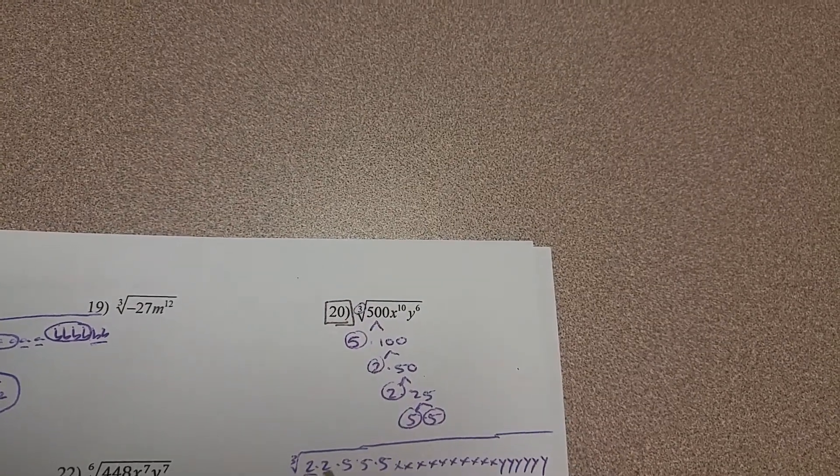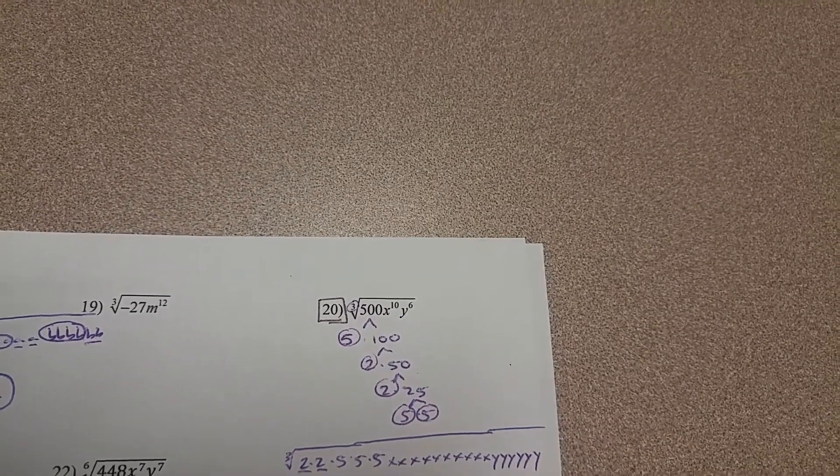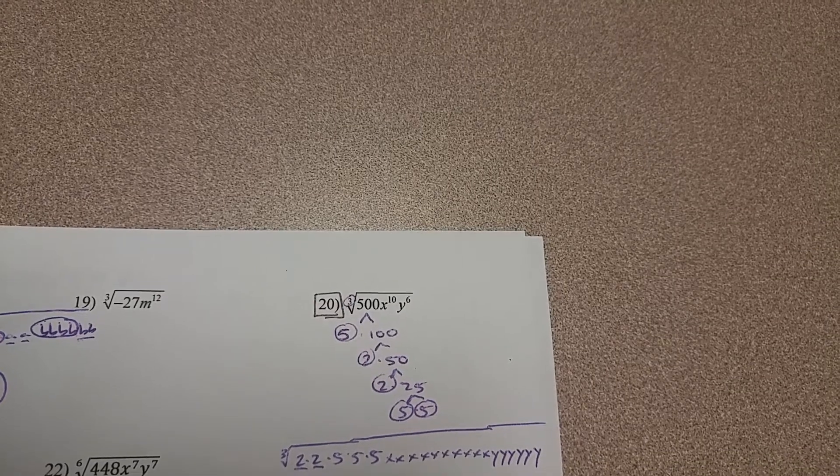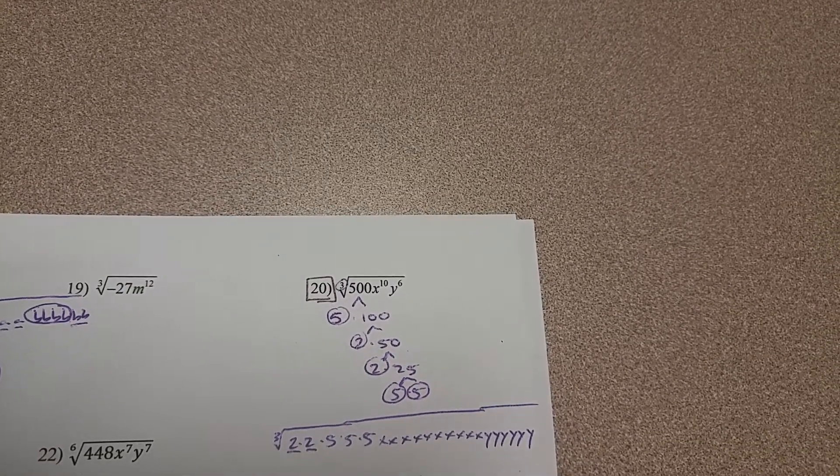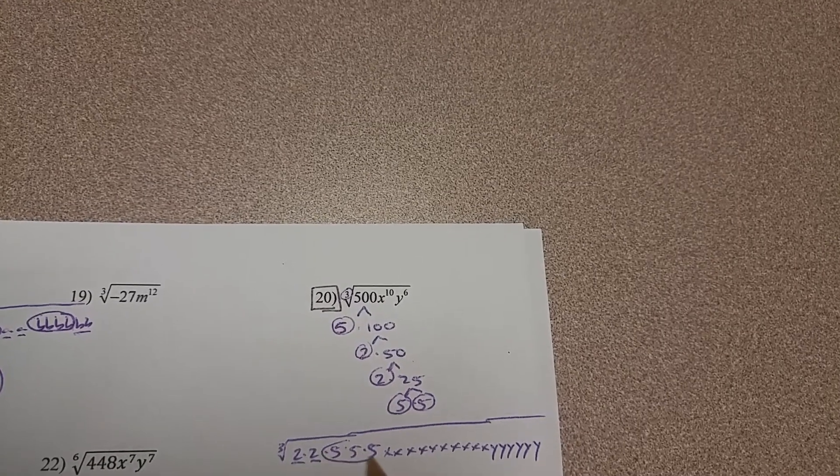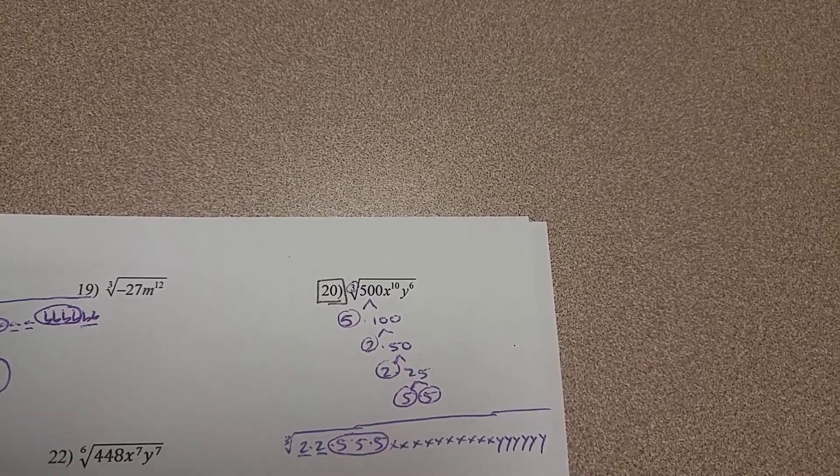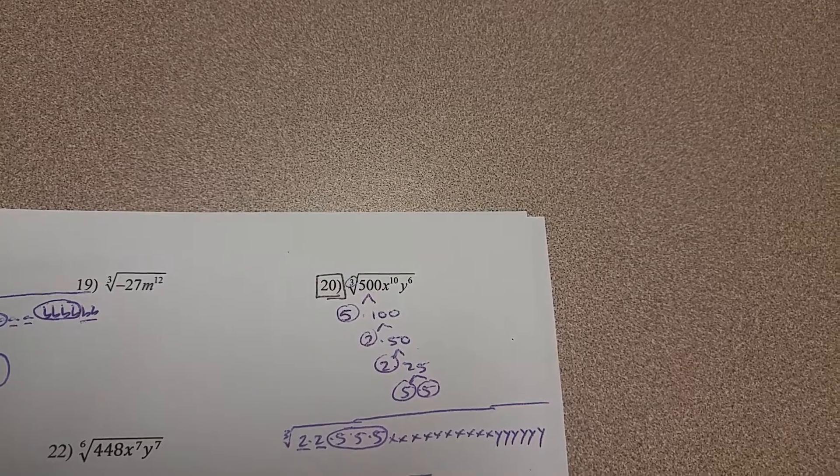So I don't have enough twos for any twos to come out. So the two squared is going to still stay under there, we could call that 4 if we wanted, or we can call it two squared. One five is going to come out because I have one group of three fives.